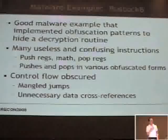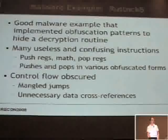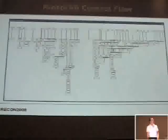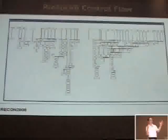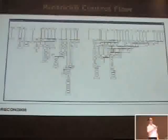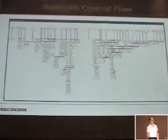They've also obscured the control flow with mangled jumps — some things that IDA Pro doesn't handle by default. Here's the control flow we started out with: all kinds of code flattening. This is one function, but it obviously isn't going to really have 25 different entry points and places to exit.